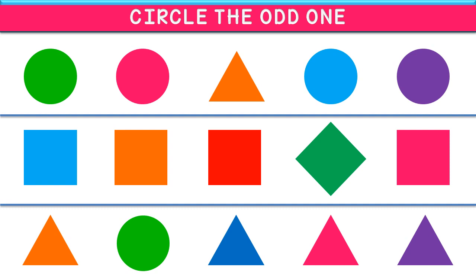Apart from this, all the shapes are circular. So, in the first row, triangle is the correct answer.